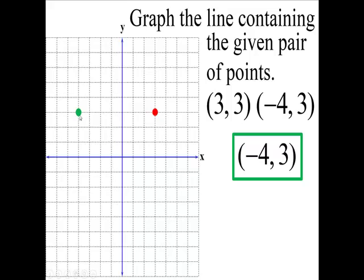This is the point 3, 3. This is the point negative 4, 3. I can draw my line through those two points.